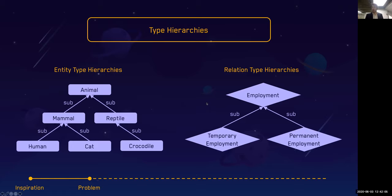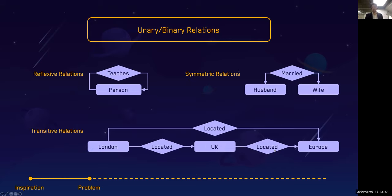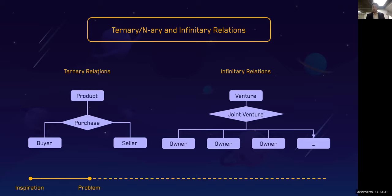We're looking at if a human is a subtype of a mammal, then a mammal is also a subtype of an animal. We can have relation type hierarchies where we've got a type of employment relation, but we may also create temporary employment or permanent employments. And then we have a lot of different types of relations: unary relations, binary relations, ternary, n-ary, infinitary, nested, equivalent relations.